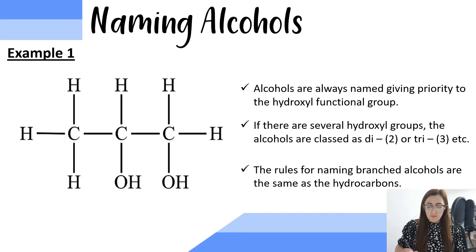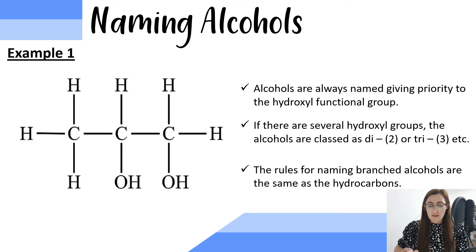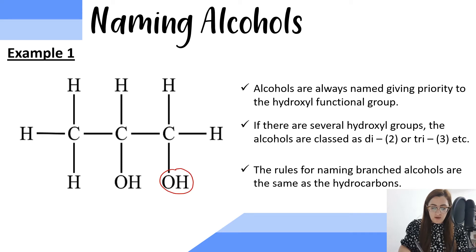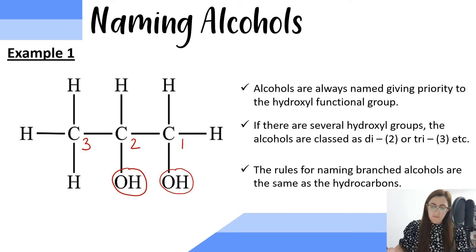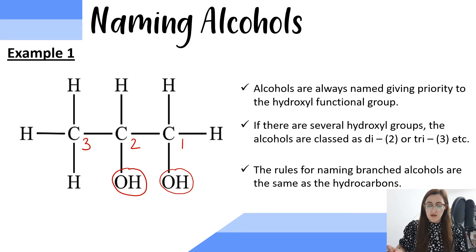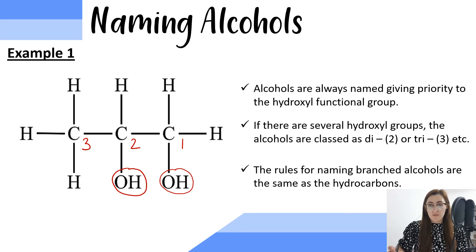In alcohols, the most important group is the hydroxyl group, so we want to give the hydroxyl group the smallest possible number when naming. We find our hydroxyl groups — I've got one on this carbon and one on this carbon — and to give them the lowest possible numbers we number the carbon chain. If there are several hydroxyl groups, the alcohols are classified as di or tri, and the rules for naming branched alcohols are the same as for naming branched alkanes.